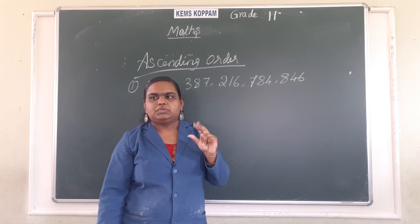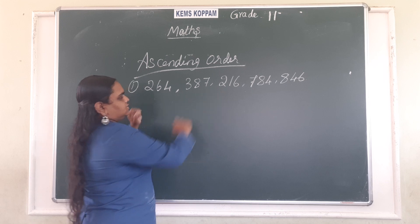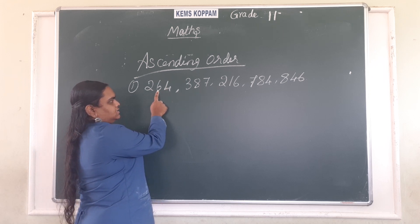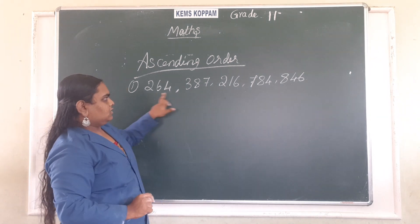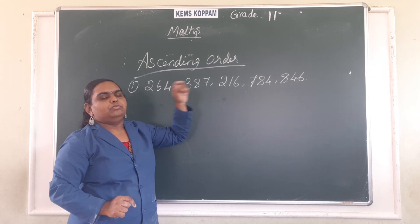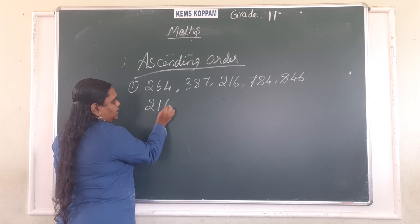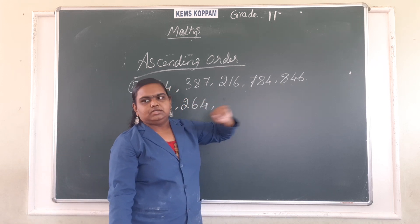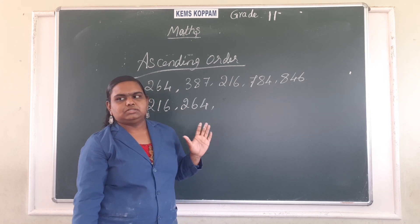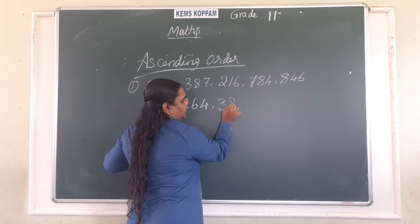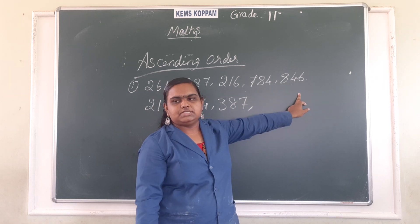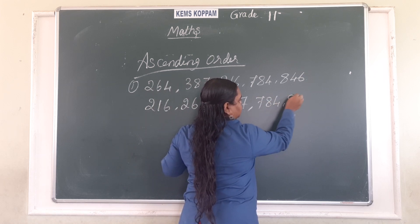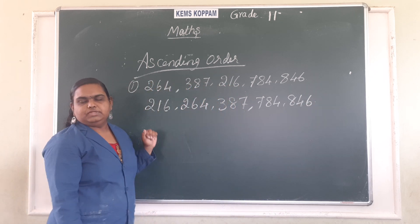Which is the smallest number? Two. But we have two starting for two numbers. So next we are going to see the second digits: six and one. One is the smallest, so we write two hundred and sixteen first, then two hundred and sixty-four. Next, the remaining digits are three, seven, eight — three is smallest, so three hundred and eighty-seven comes next, then seven hundred and eighty-four, then eight hundred and forty-six. This is the arrangement in ascending order.